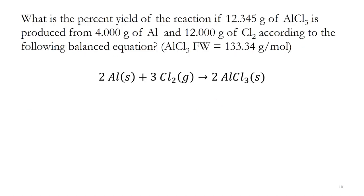Let's do an example. What is the percent yield of a reaction if 12.35 grams of aluminum chloride is produced from 4 grams of aluminum and 12 grams of chlorine, according to the following balanced chemical equation? First, we need to think about what these numbers are. My reactants are aluminum and chlorine — the starting materials. We have 4 grams of aluminum and 12 grams of chlorine. My product is aluminum chloride, and it says I produced 12.345 grams — that is my actual yield, which I'll need to calculate my percent yield. So I've got to first calculate the theoretical yield.